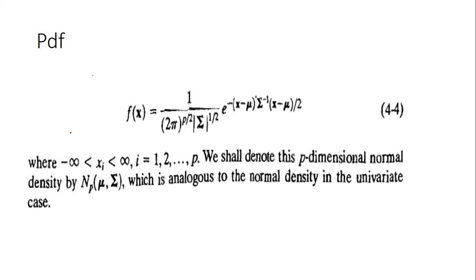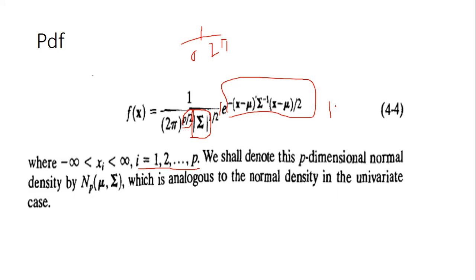Now let's look at the multivariate normal distribution PDF, which is a generalization of the univariate case. We have one upon (root 2 pi) to the power p/2, meaning we are taking p components. Then we take the dispersion matrix sigma. In the exponential form, the order must be one cross one. We take x minus mu, sigma inverse (which is an n cross n matrix), then x minus mu again.